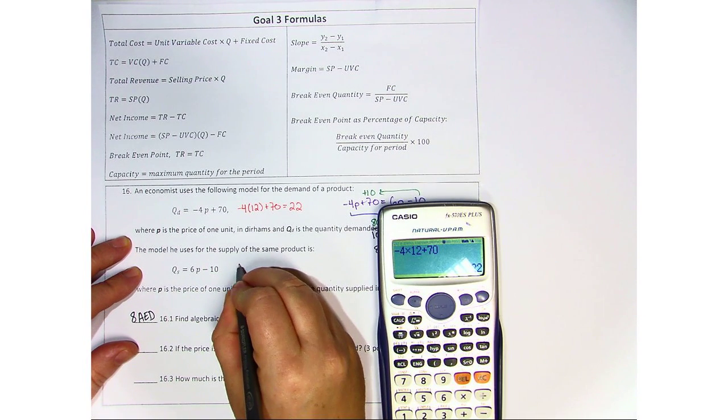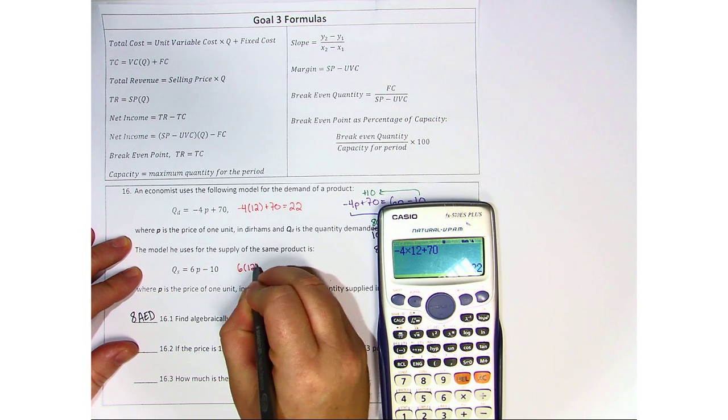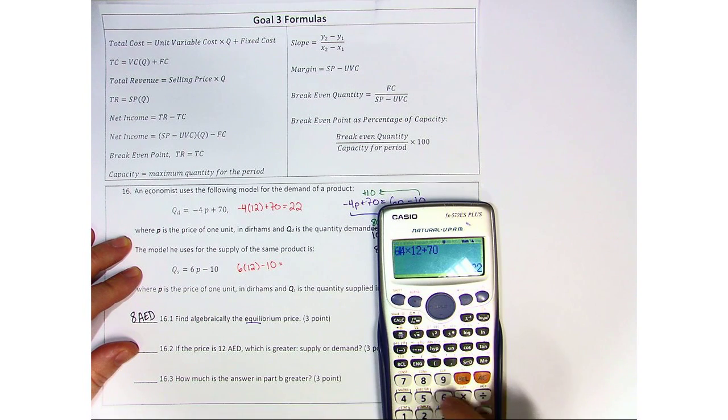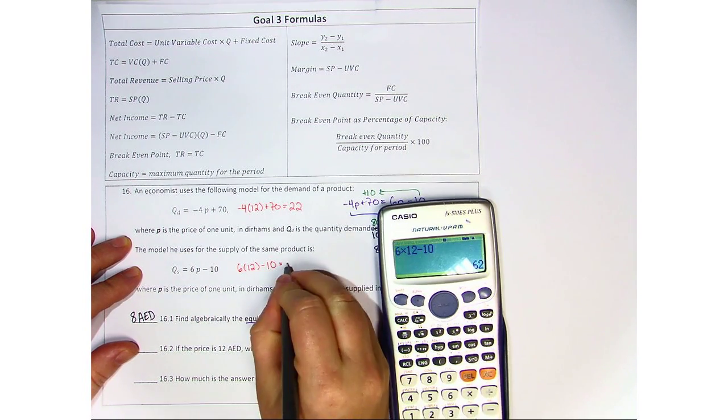Now we're going to do the same thing here. 6 times 12 minus 10, and that's 62.